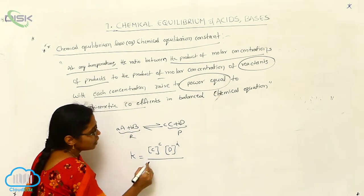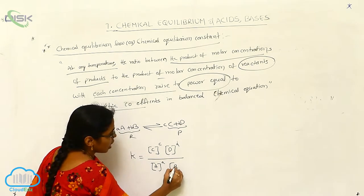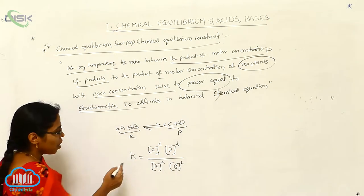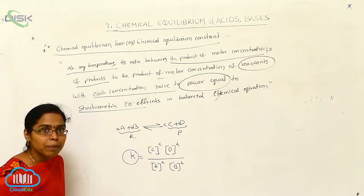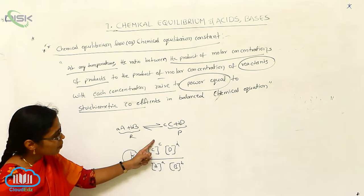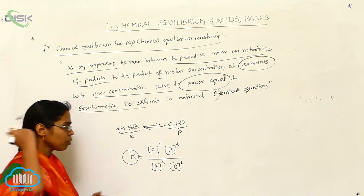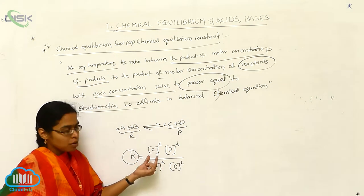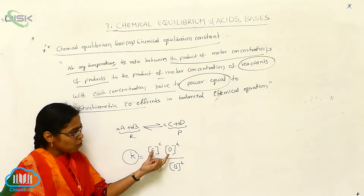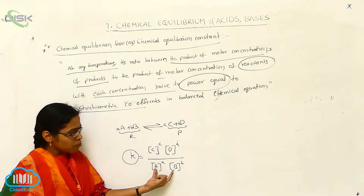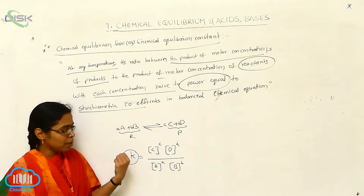Next, for the molar concentration of reactants: reactant A raised to power a and reactant B raised to power b. So this is called the equilibrium constant — [C]^c times [D]^d divided by [A]^a times [B]^b. The ratio between the product of molar concentrations of products to the molar concentration of the reactants is called the chemical equilibrium constant.